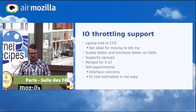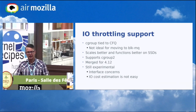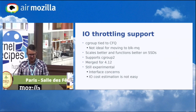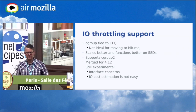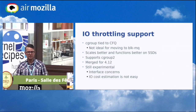IO throttling is another thing we improved. The original support was tied to CFQ, which is a legacy IO scheduler that doesn't work in block multi-queue. The original throttling support was also from the early days of flash and wasn't very scalable. The new support scales much better, works well on SSDs, supports cgroups v2, and was merged for 4.12 — with the caveat that the interface is still unstable. We decided to merge it with the interface in flux so that production usage would guide how the interface should change.